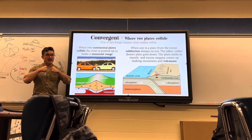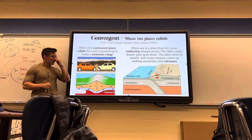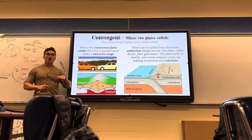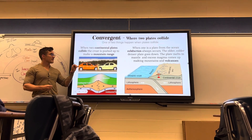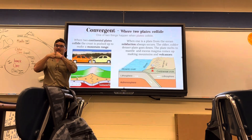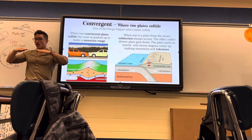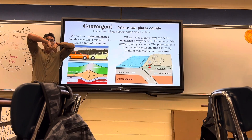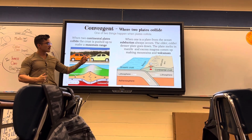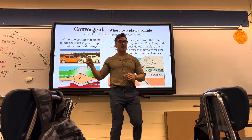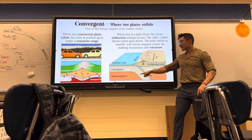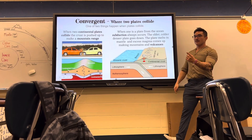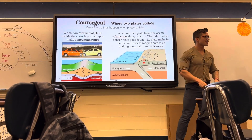Convergent boundaries are the ones where plates smash together. Just like the hoods of cars when they smash together and fold up - that's how mountains are made. Every single mountain was made when two continental land plates smashed into each other. Usually when two land plates smash together, neither goes underneath because they're both similar density, so they smash and fold up, making mountains. But when one is an ocean plate, the ocean plate is heavier so it sinks underneath - that's called subduction.